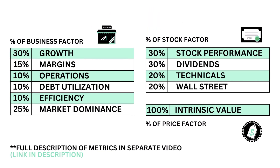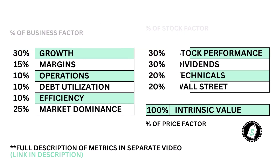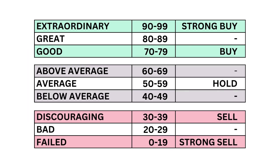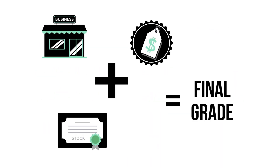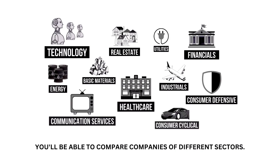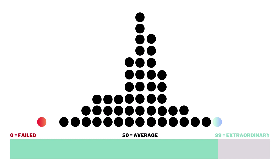Within each factor are a total of 11 metrics, from business growth and performance to intrinsic value. Each of the three factors and 11 metrics are given a grade from 0 to 99, with 50 to 59 being considered average. When we've got the three factors graded, we combine them to get our final grade. Each company belongs to a specific sector of the economy, and my analysis normalizes the data so you can compare companies between sectors. Most companies will fall into that average range, since most companies are indeed average long-term investments.